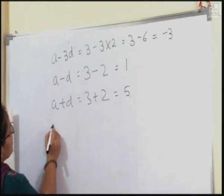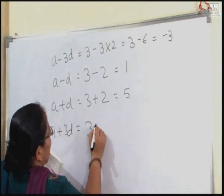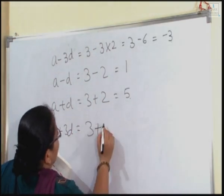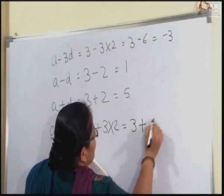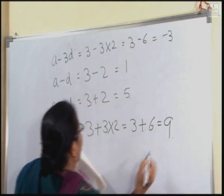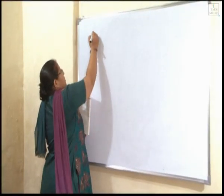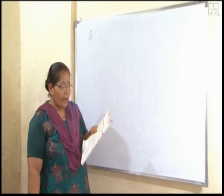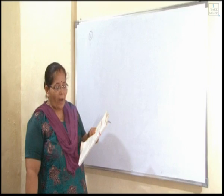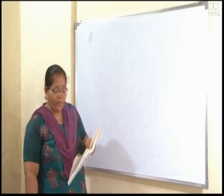And the fourth term is A plus 3D, equal to A value is 3 and D value is 2, equal to 3 plus 6, equal to 9.